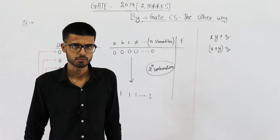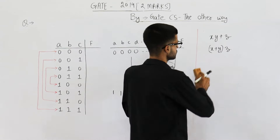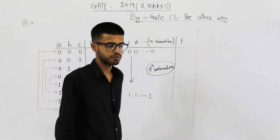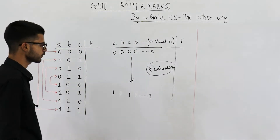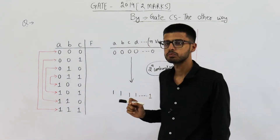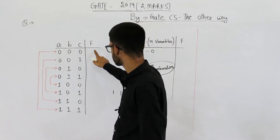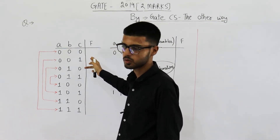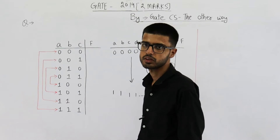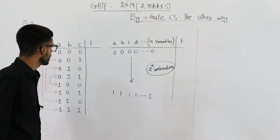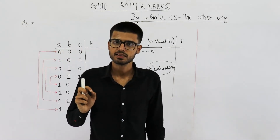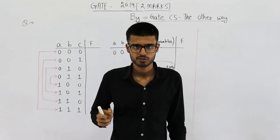If a function and its dual are both the same, we call such a function a self-dual function. They are asking us to find out the number of self-dual functions. There is a condition for a function to be self-dual. The first condition is the number of minterms must be equal to the number of maxterms, meaning the number of zeros must equal the number of ones in the output.